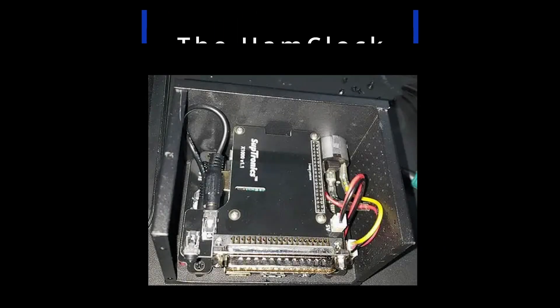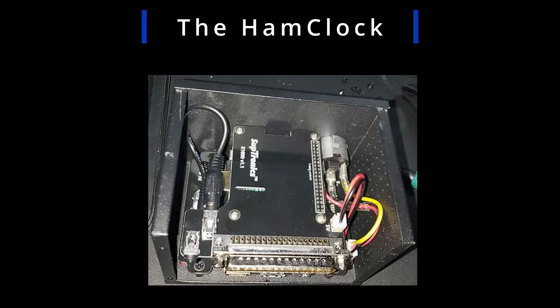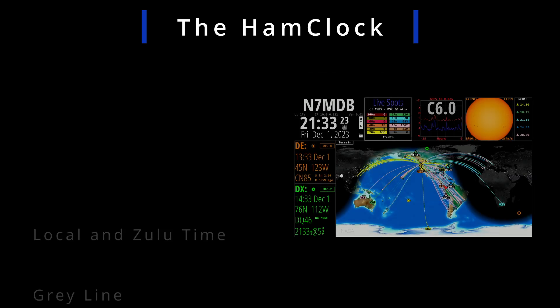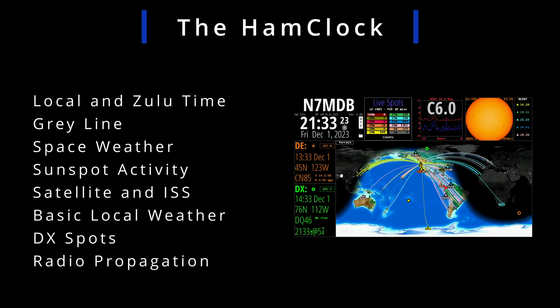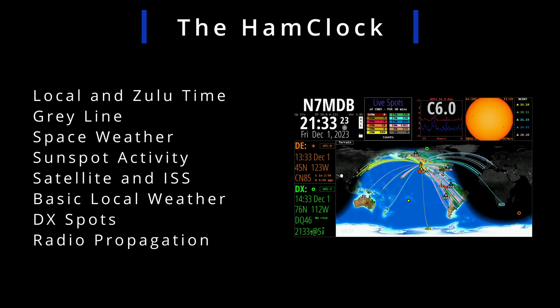With the ham clock, the user downloads and installs a program to a Linux platform, and then once it's set up by the user, you get a real tidy display that includes data for a ham radio audience.